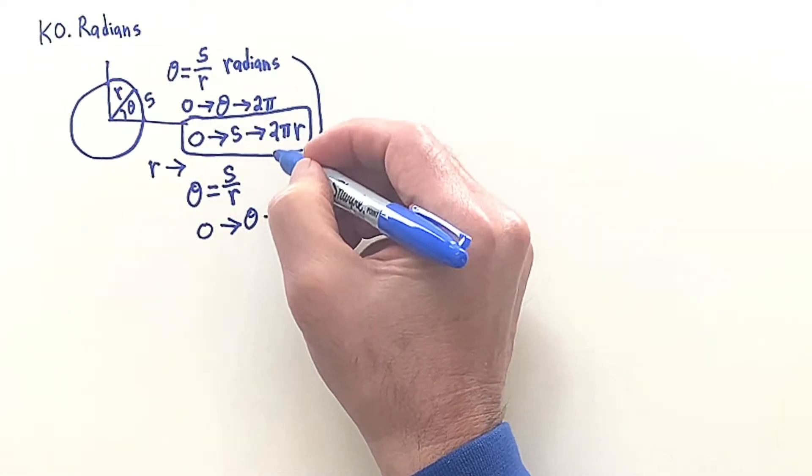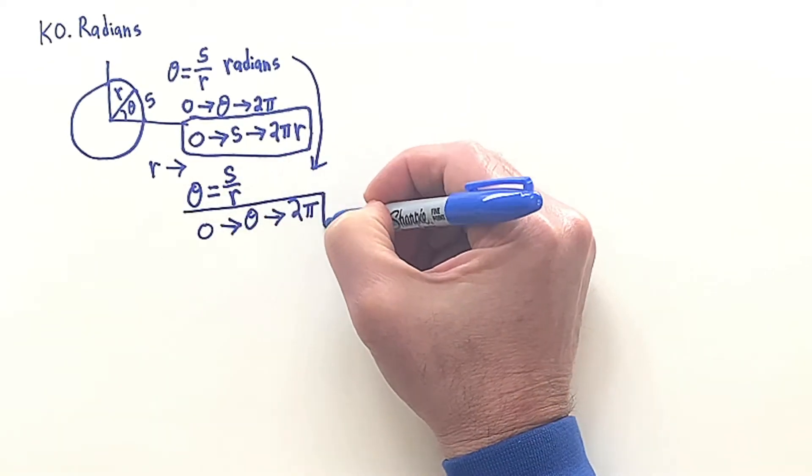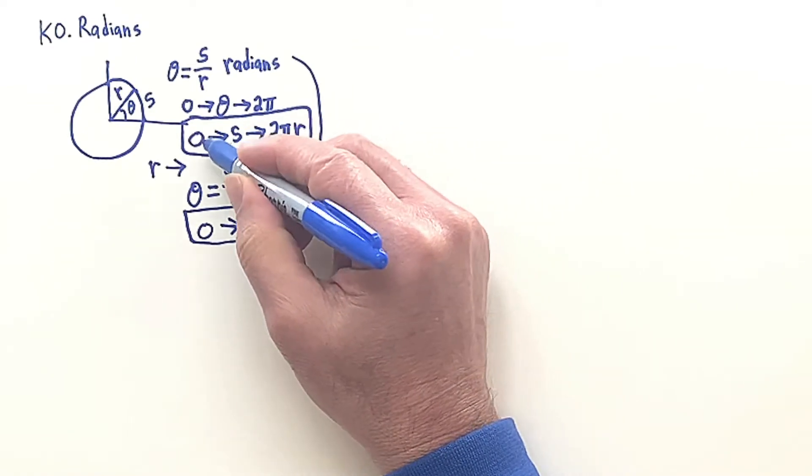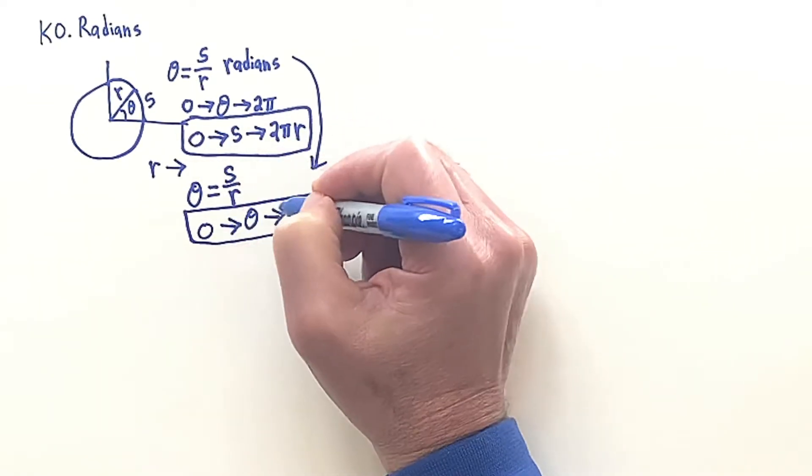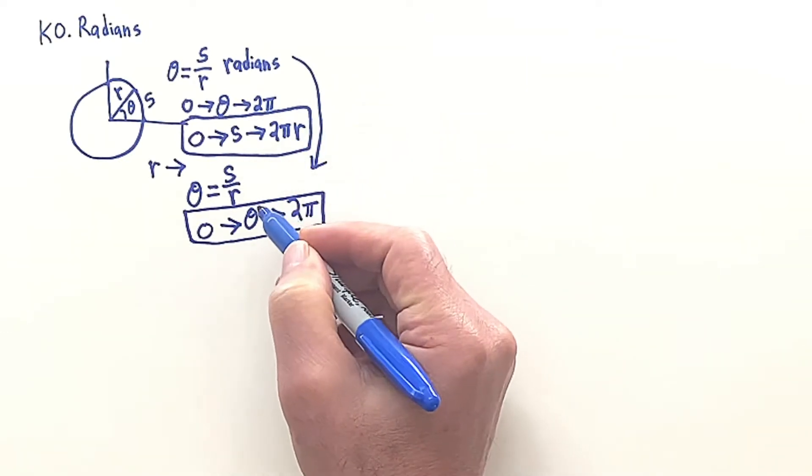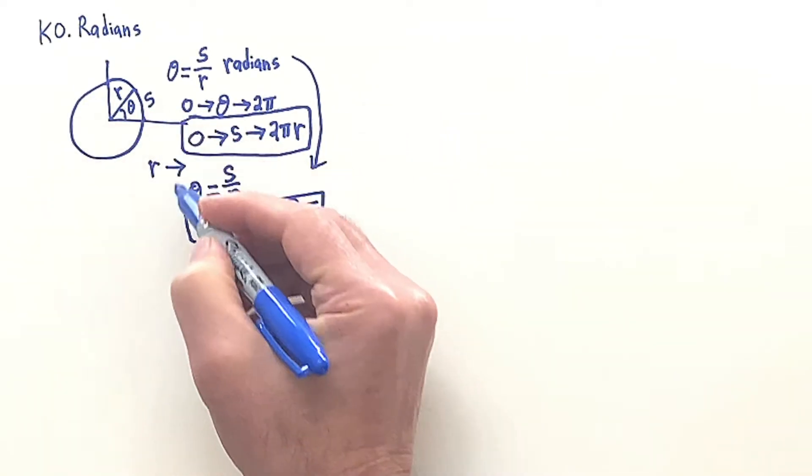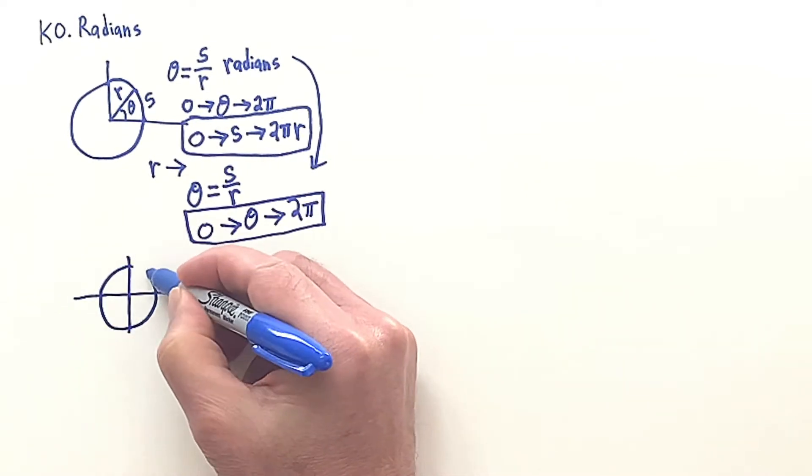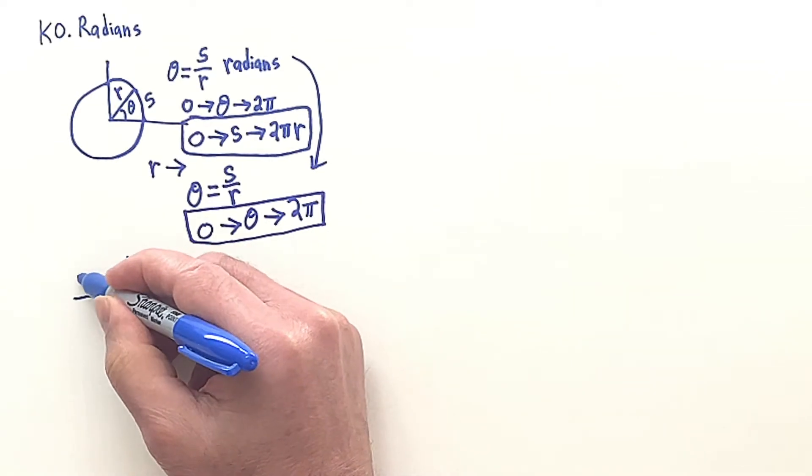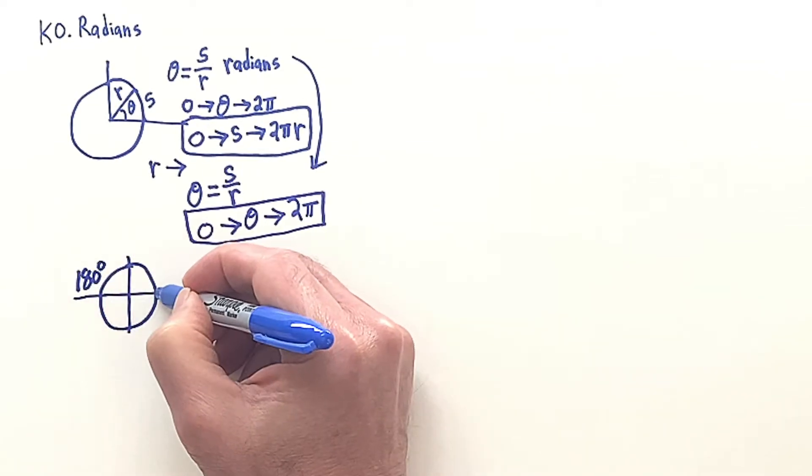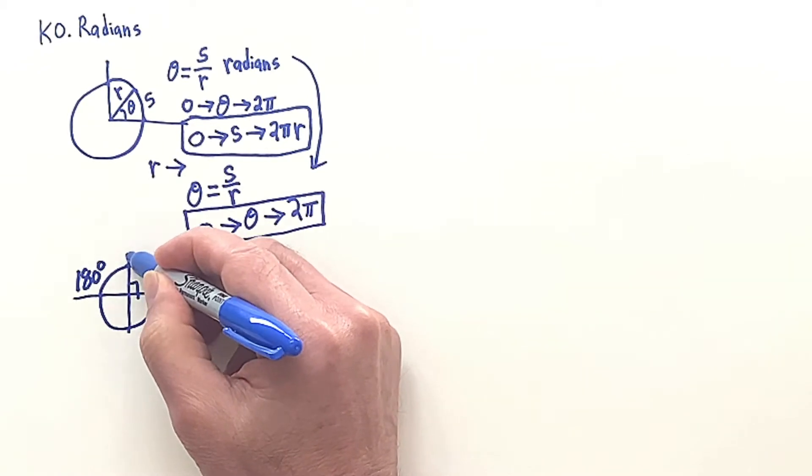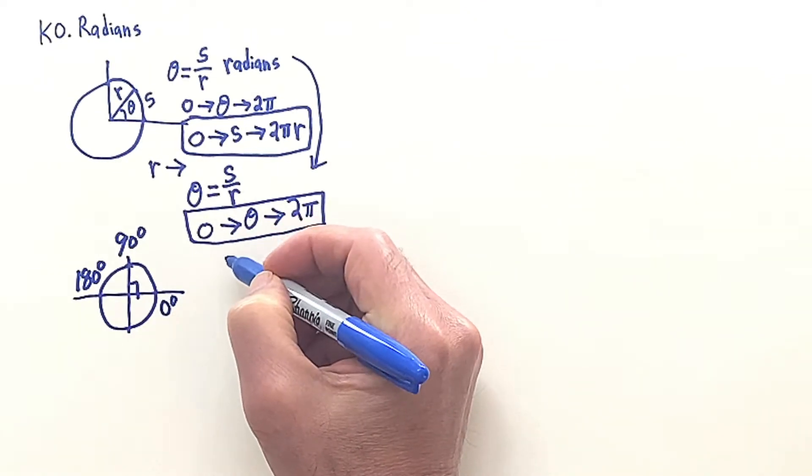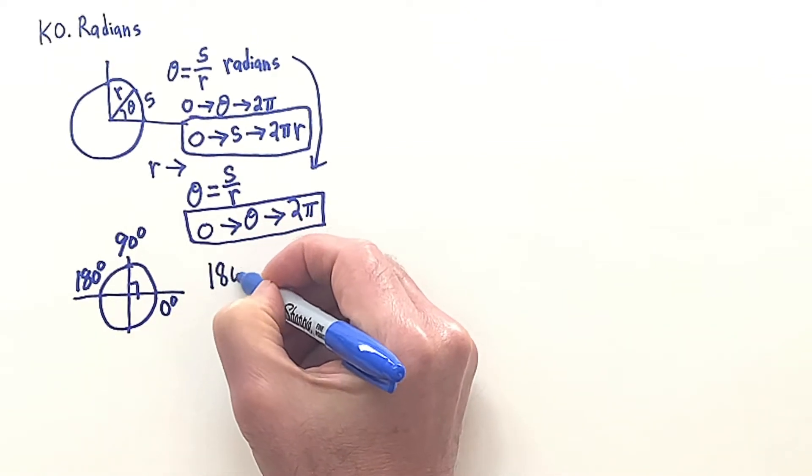So that's very important to note these two ranges: as S goes from zero to two pi R, the angle goes from zero to two pi. If we go around halfway, if we want to make some correlation now with angles and degrees, if you go around halfway, that's 180 degrees. And this here is 90 degrees if you want to come up to the top here and start there at zero degrees.